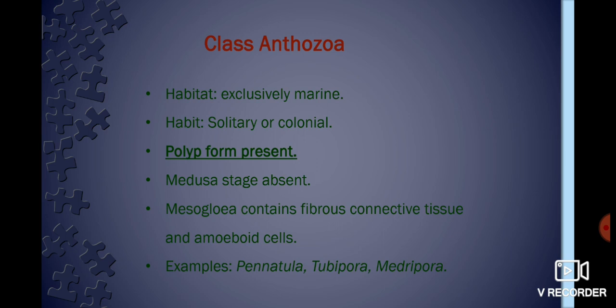The third class is Class Anthozoa. They are exclusively marine and live a solitary life, though some live in colonies. The medusa stage is absent in them; only the polyp form is present and that is the dominant stage. The mesoglea in them contains fibrous connective tissue and amoeboid cells. Examples of Class Anthozoa are Pennatula, Tubipora, and Meandrina.